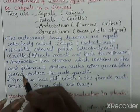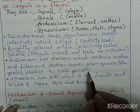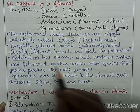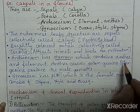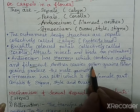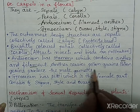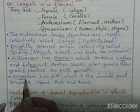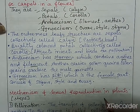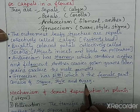Next is the androecium, which contains stamens. Each stamen has an anther and a filament. The anthers carry pollen grains, and pollen grains produce the male gametes — so androecium is the male part of the flower. The gynoecium is the female reproductive part, consisting of the pistil, which has three parts: stigma, style, and ovary.